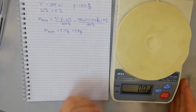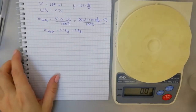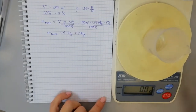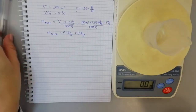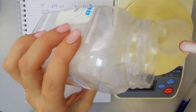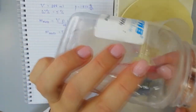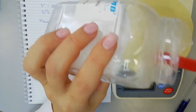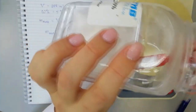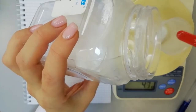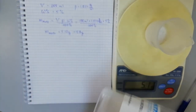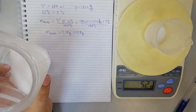Now we weigh the sodium chloride. We take an empty glass and put it on the scales, then press the red button to zero the weight of the glass. We take a spoon and start adding salt to the glass. The reading reaches 5.1, so I switch to a smaller spoon and bring it to 5.2 grams.